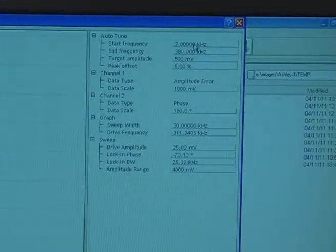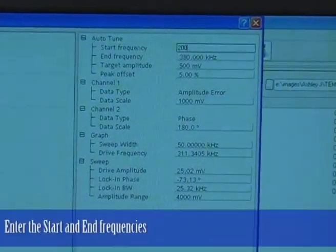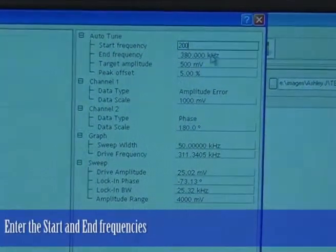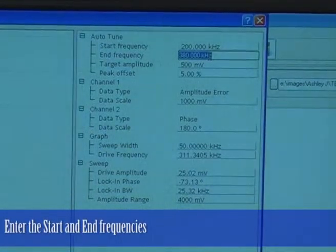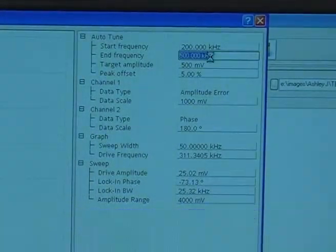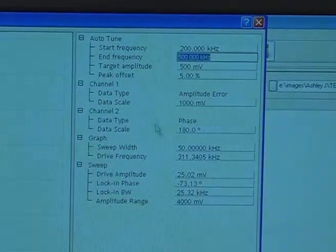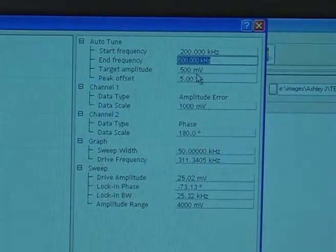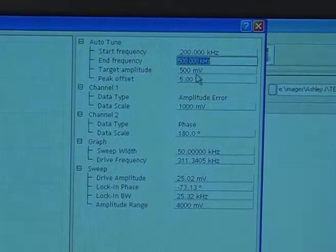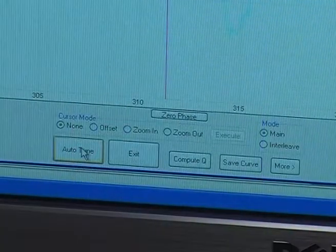So we'll start our scan at 200 kHz and we'll finish it at 500 kHz to make sure we definitely find the resonance peak. We'll leave the target amplitude at 500 millivolts, we'll hit auto-tune.